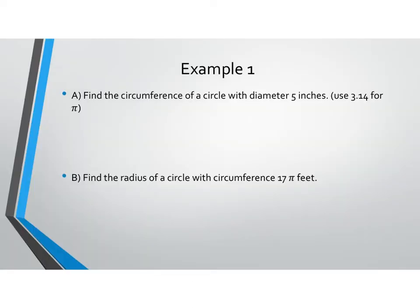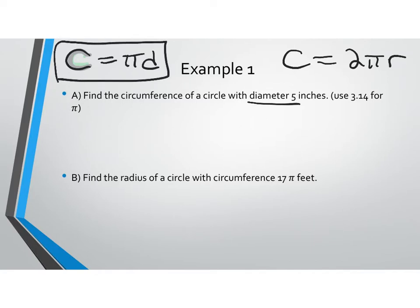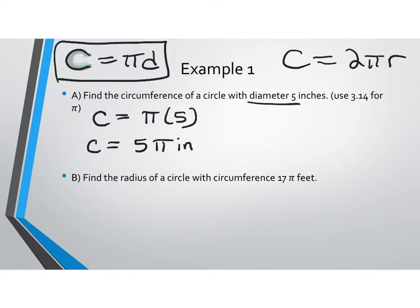Here's our first example. It's asking us to find the circumference of a circle with a diameter of 5 inches. I'm going to do this two ways — first leaving it in terms of pi, then using 3.14 for pi. The formula for circumference is C = πd or C = 2πr. Since they gave us a diameter, I'll use C = π × 5. Left in terms of pi, the answer is 5π inches.